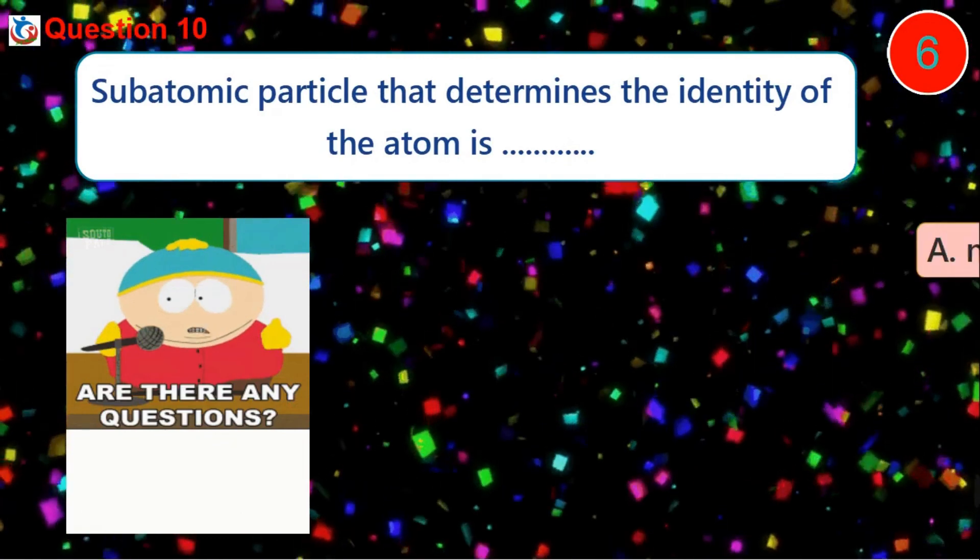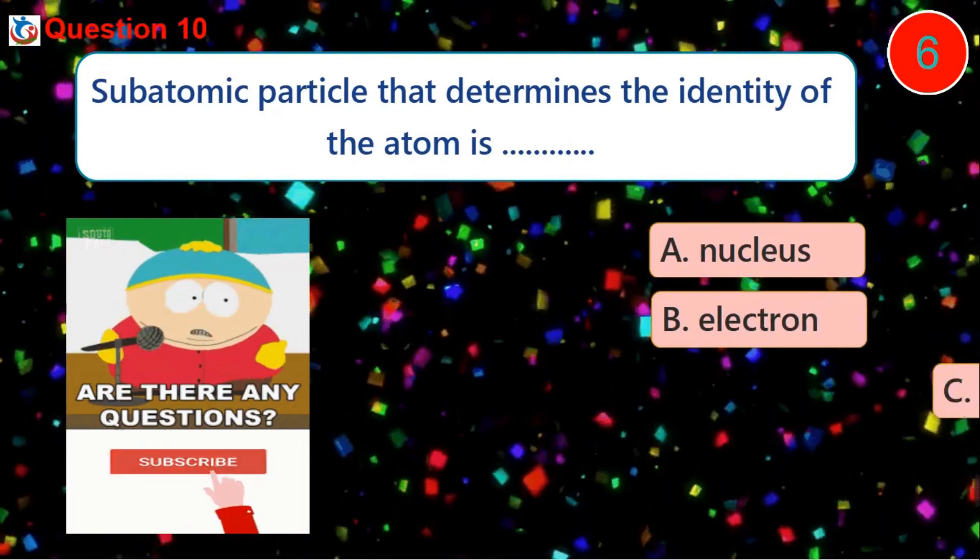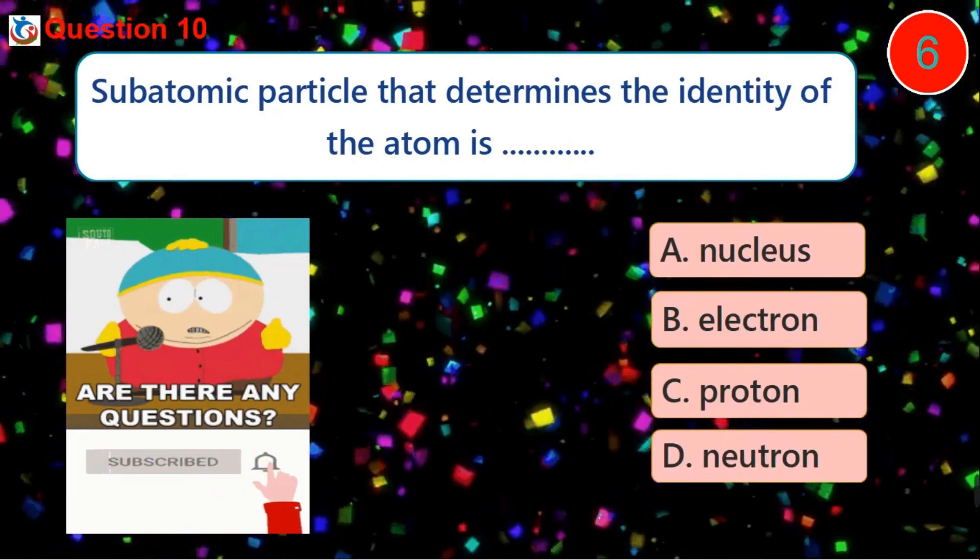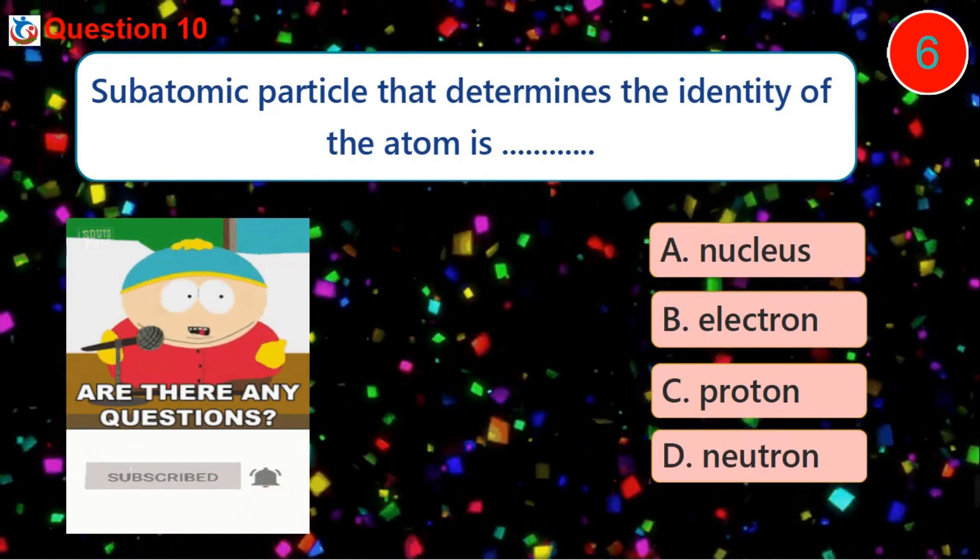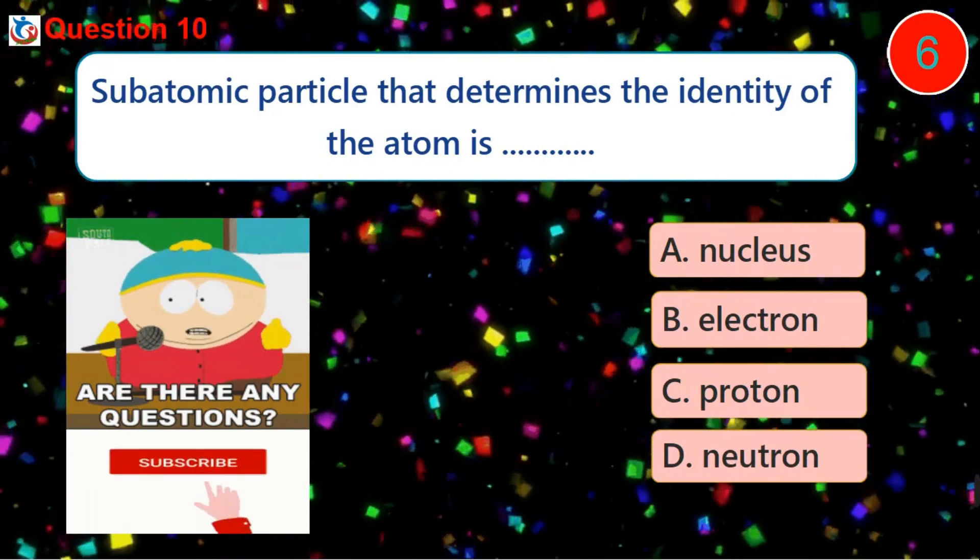Question 10. The subatomic particle that determines the identity of the atom is dash. A. Nucleus B. Electron C. Proton D. Neutron.